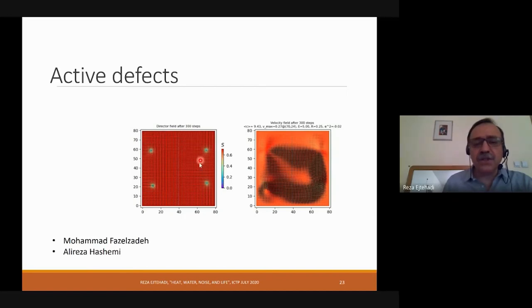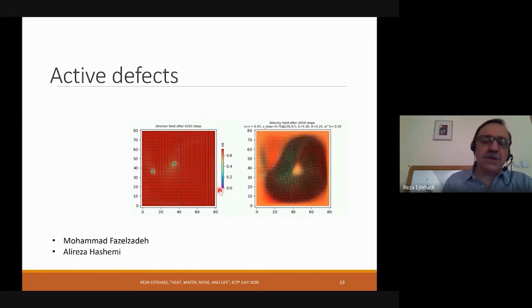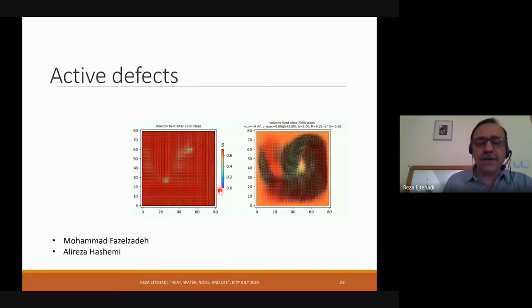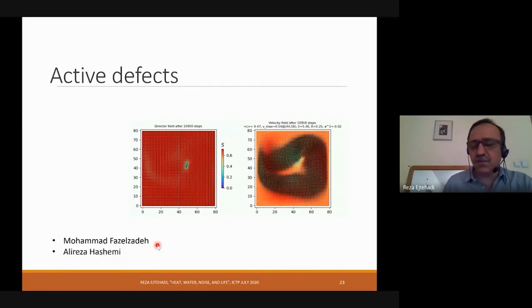You can see some topological defects: plus half and minus half. Here you can see the flow field of this active media. We now see how the activity can produce some kind of movements and sometimes annihilation of topological charges. This is something we are working on right now, to see the activity of defects in this kind of active nematics. Mohamed Fazilzadeh and Ali Reza Hashemi are two master students working on that project.